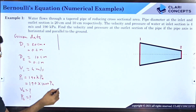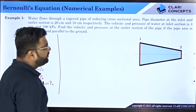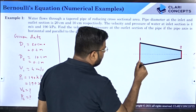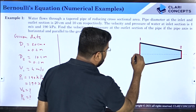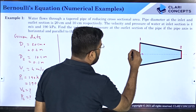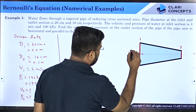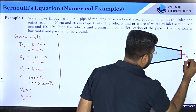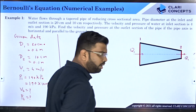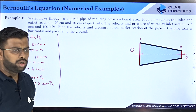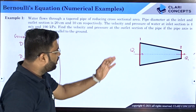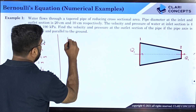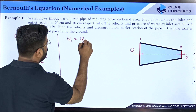For sections 1 and 2, the flow rate entering Q1 should equal the flow rate leaving Q2 because this is incompressible flow with water and there is steady flow. So Q1 equals Q2.